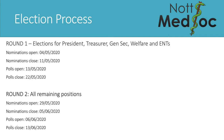The elections will take place in a two-step process. Round one nominations open today on the 4th of May and will close in a week's time on the 11th of May. These are for the first five committee positions: President, Treasurer, General Secretary, Welfare Officer, and ENTS Officer. Voting then opens on the 13th of May for a week, closing on the 22nd of May.